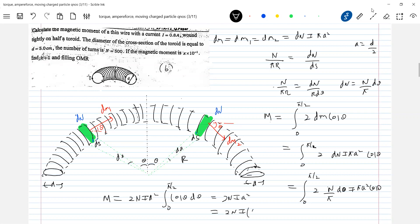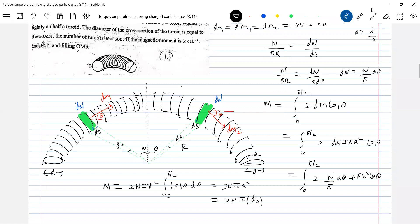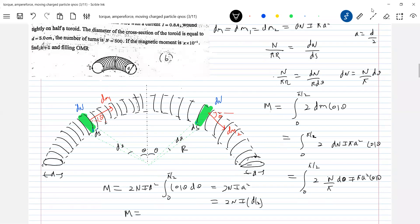So the final answer will be 2 N I A square. What is A? A is d by 2. So N I d square by 2. Number of turns given, total number of turns, current and diameter. So like this we will get the dipole moment and it will be directed in what direction? Towards right.